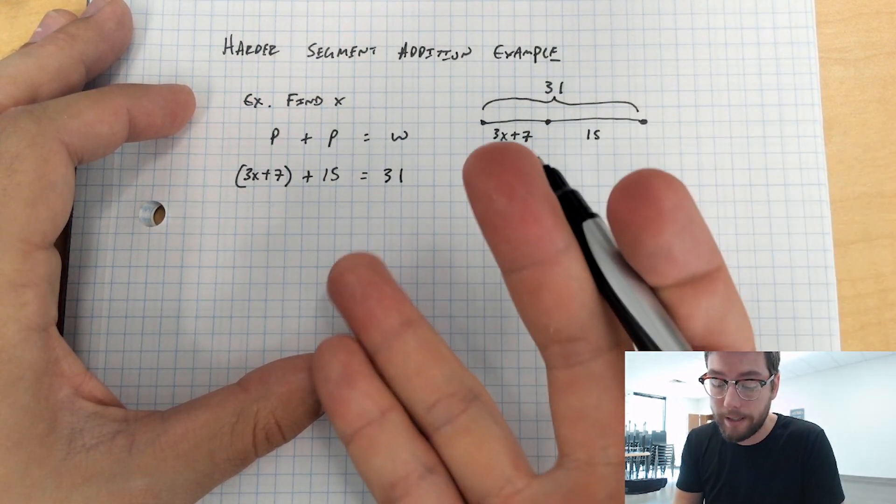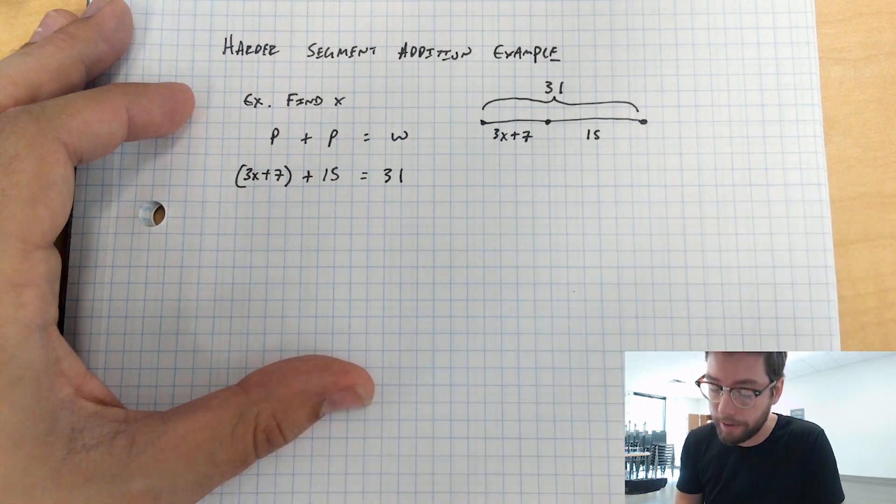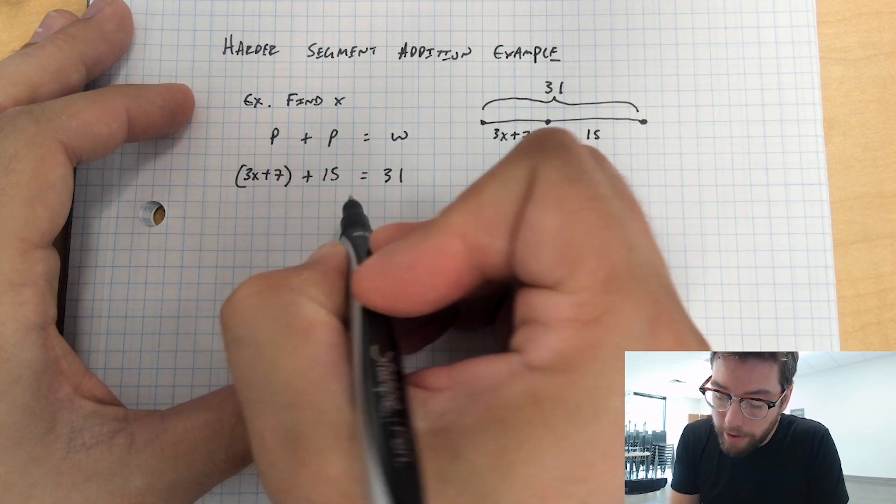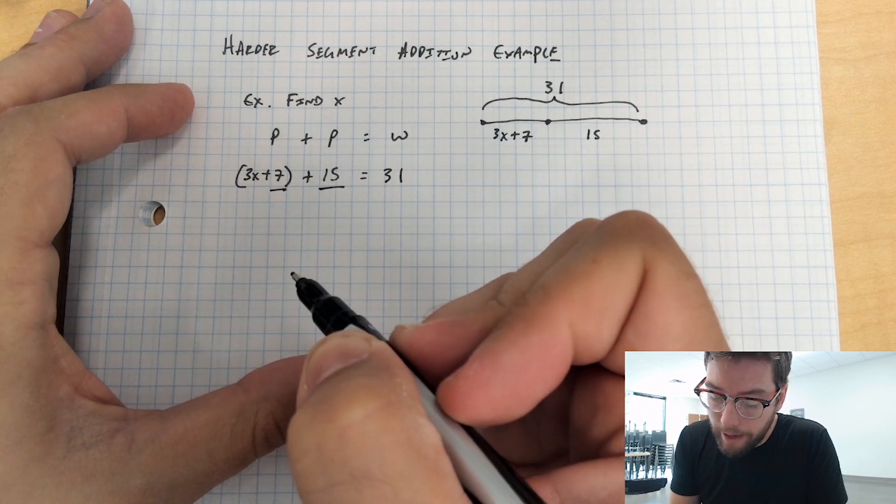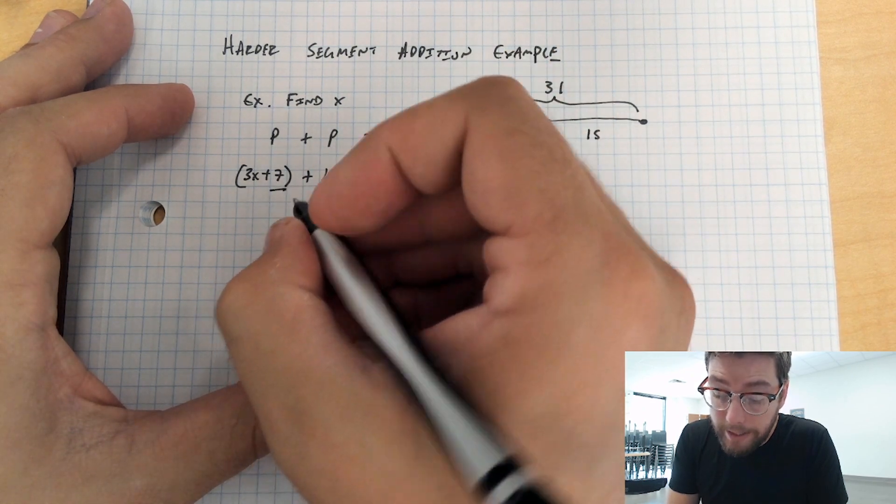All right, that's easy. Now we just have an algebra problem we solved last year. We're going to combine like terms on the left. So we have 7 and 15, and those are going to combine together.